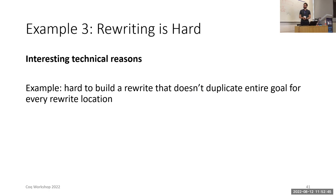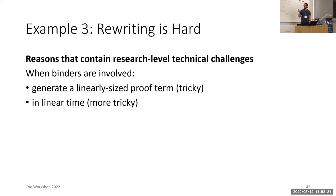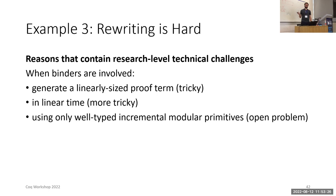The main example that I have of interesting technical reasons that rewriting is hard is that it is hard to build a rewrite that doesn't duplicate the entire goal at every rewrite location. Rewrite strat is a little bit better than this, but it still incurs a super-linear cost in the proof size in the number of rewrite locations and the size of the goal. Finally, rewriting is hard for reasons that contain research-level technical challenges when binders are involved, when it is quite tricky to generate a linearly-sized proof term, and it is even more tricky to do this in linear time. As far as I know, it's an open problem to do this if you are using only well-typed incremental modular primitives.